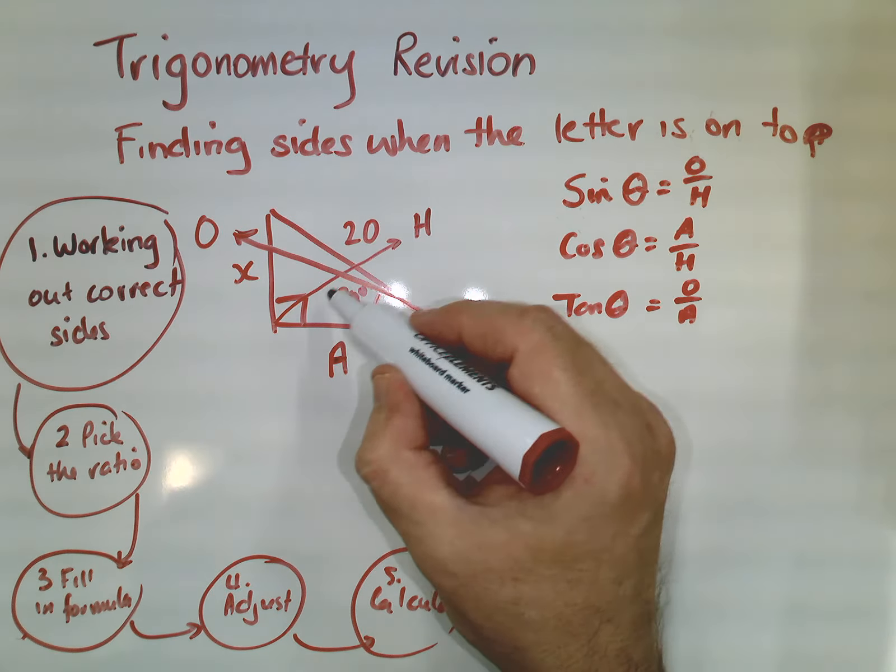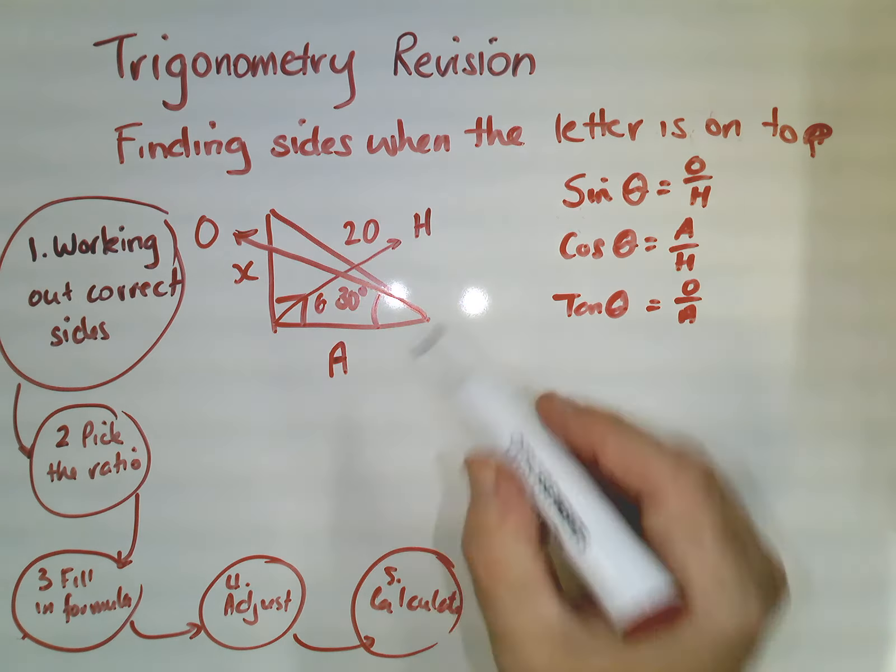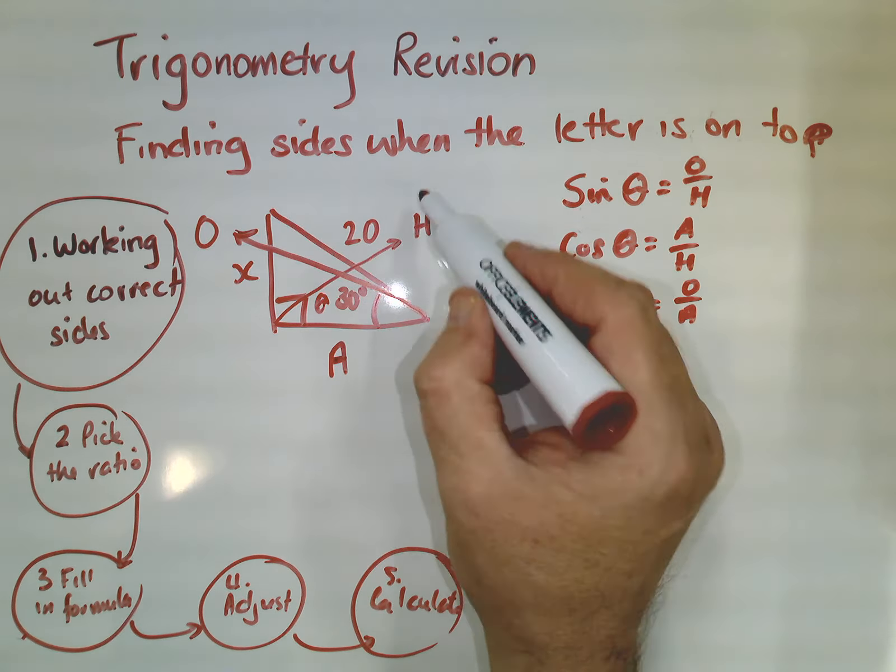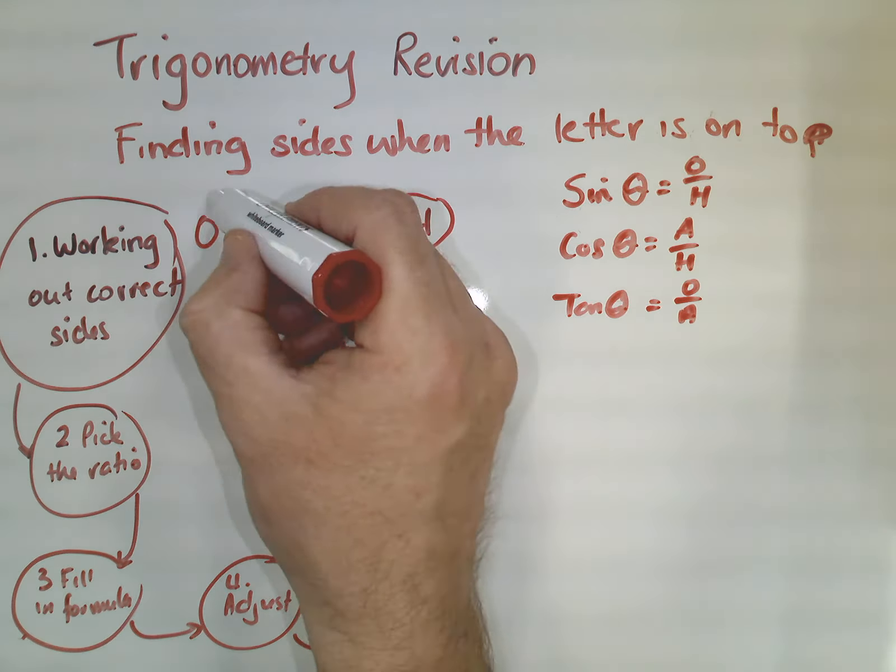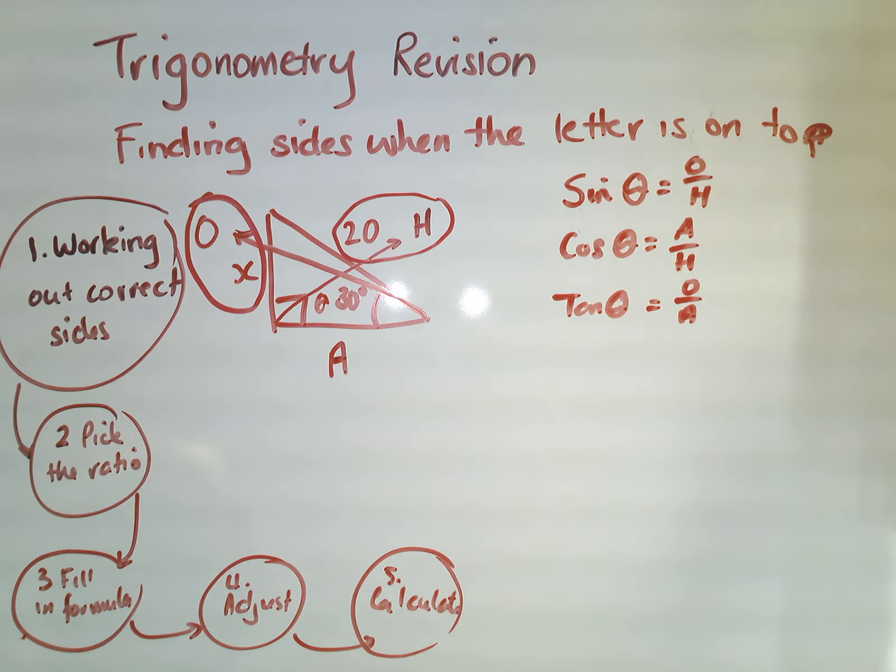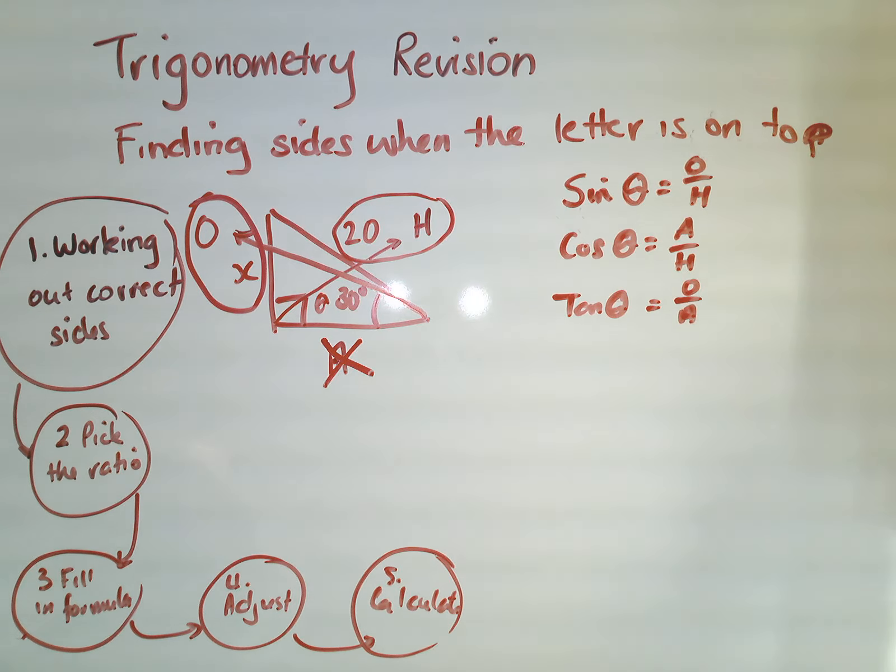And what I like to do so I don't get confused, I put a little angle sign next to my angle. So there's my little angle sign there. And then I circle the sides in which I have either a number or a letter value for. And this one, you can see that I'm also going to cross out the adjacent side because I'm not using it.